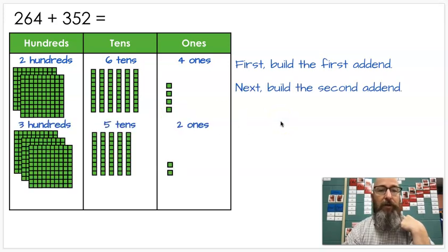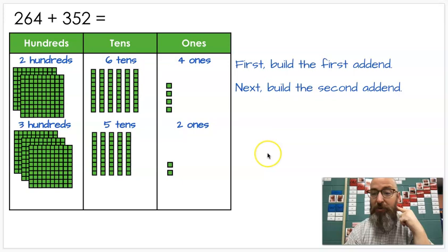And then I'm going to build the second number, three hundred fifty two. That's three hundreds. Five is for five tens. Two is for two ones. Now that we've built it, we're going to put them all together. Now let's look and see what we should have. We should have five hundreds, eleven tens, because six and five is eleven, and six ones. And if you're not sure if that's eleven, just count them. One, two, three, four, five, six, seven, eight, nine, ten, eleven. So you can always count them if you're not sure if your math is correct.